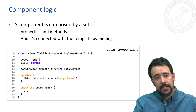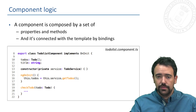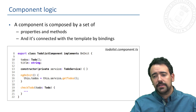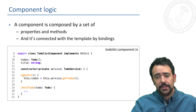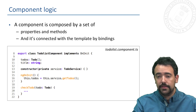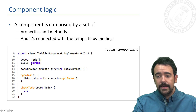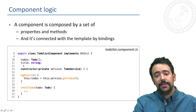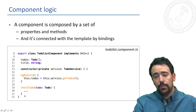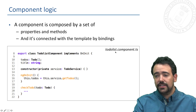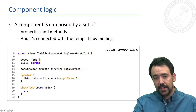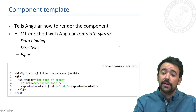Regarding the logic, as I introduced before, this is just a JavaScript class in which we define a set of properties and methods, and it is connected with the template by bindings. Here we can see for instance the logic of this to-do list component, in which we have defined two properties, a constructor, and two methods. This is included in a file with the TypeScript extension.